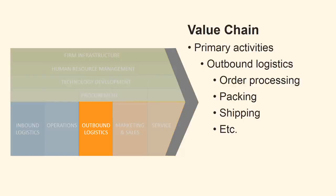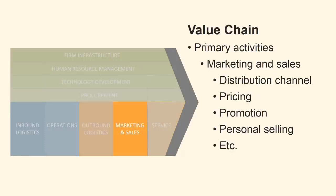Outbound logistics are activities associated with order processing, packaging, shipping — everything which deals with the distribution of the finished product to buyers. Marketing and sales are activities associated with providing the customer with information about the product's excellence, which should lead to a sale. Marketing and sales are involved in determining the product's distribution channel, pricing, promotion, personal selling, etc.